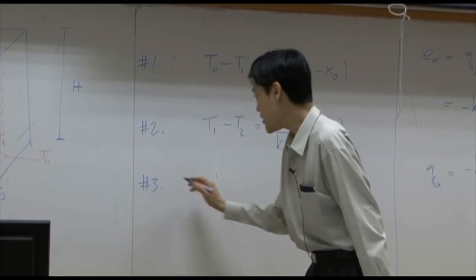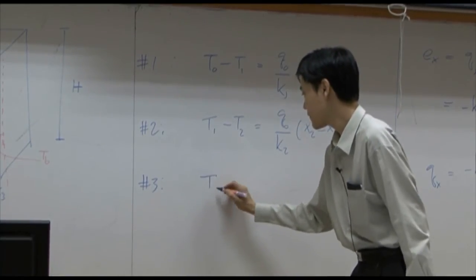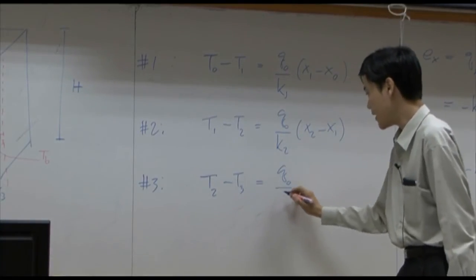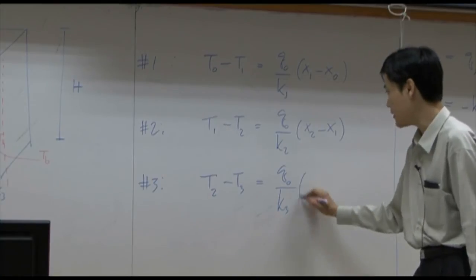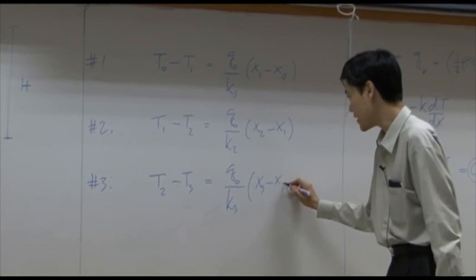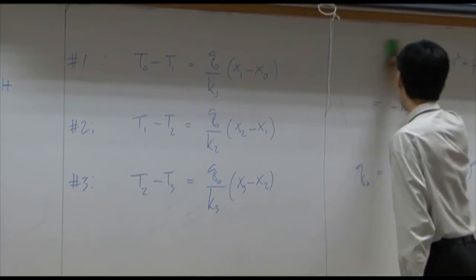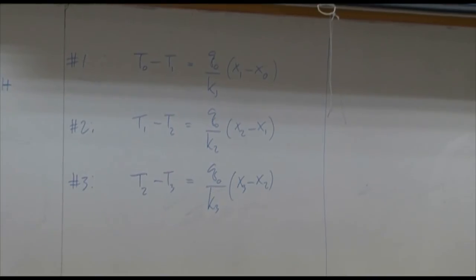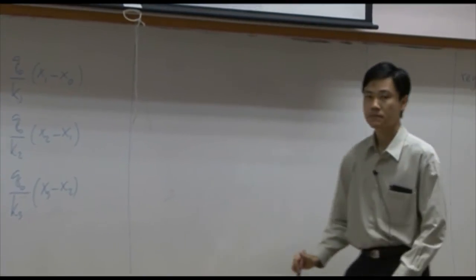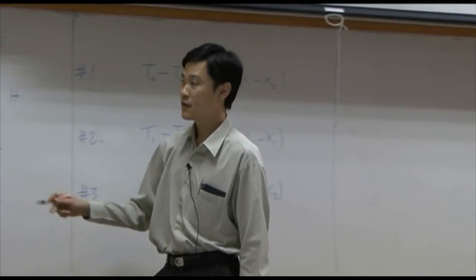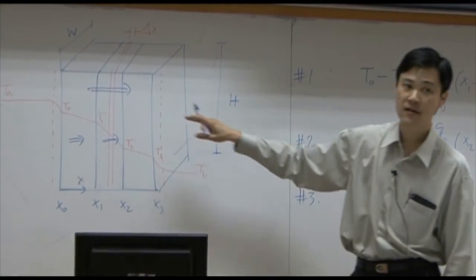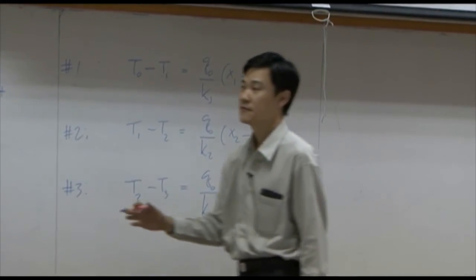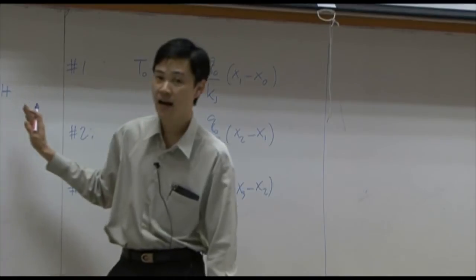However, if the unit areas are not equal like this, then the flux may not be constant anymore. For the third region, you have T2 minus T3 equal to q0 divided by k3 times x3 minus x2. So the first layer, second layer, third layer are already done.